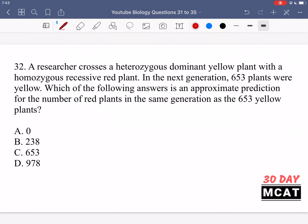In 32, it says a researcher crosses a heterozygous dominant yellow plant with a homozygous recessive red plant. In the next generation, 653 plants were yellow. Which of the following answers is an approximate prediction for the number of red plants in the same generation?